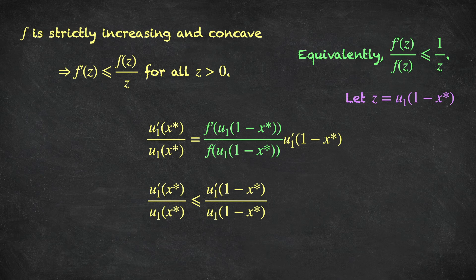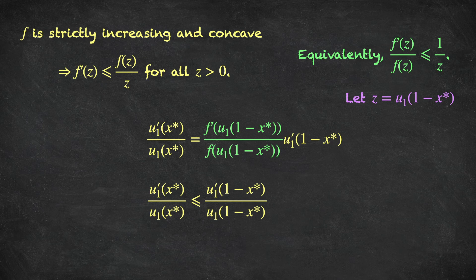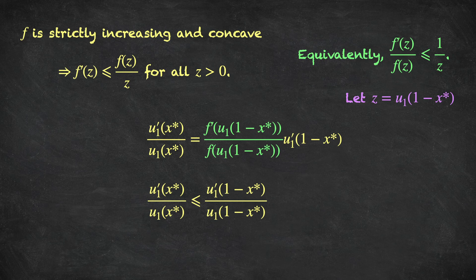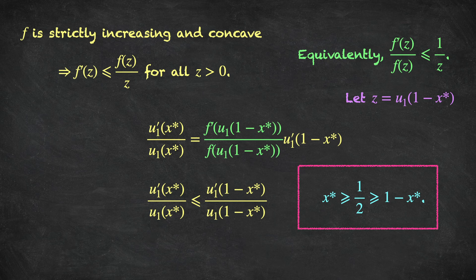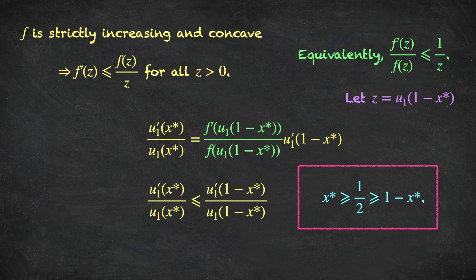Now remember that player one's utility is a strictly increasing and concave function, and so the marginal utility, the first derivative of the utility function, is a decreasing function. It's positive, but it's decreasing. His utility is increasing, and so this ratio of marginal utility decreasing divided by an increasing function means that this ratio is decreasing as X gets larger. And so for this inequality to be true, we must have that X star is greater than one minus X star. Equivalently, this means X star is greater than or equal to one half, and one minus X star is less than or equal to one half.